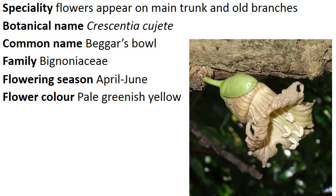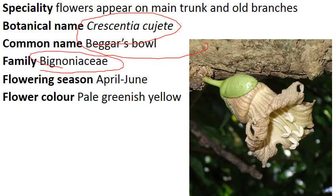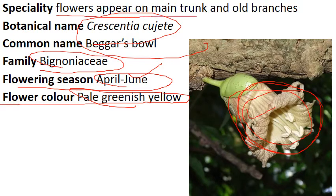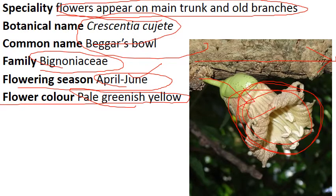Now comes to Beggar's bowl. Scientific name is Crescentia cujete. Family is Bignoniaceae. Flowering season is April to June, summer season. Flower color is pale green-yellow — you can see the pale greenish-yellow color; it looks like white but in practice it is yellow. Important feature: flowers appear on the main trunk and old branches — this is called cauliflory. You can see the flowers appearing on the main trunk. Similarly, in the case of the Cannonball tree, the cannonballs also appear on the main trunk.